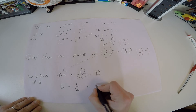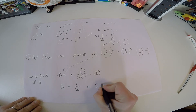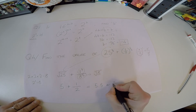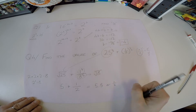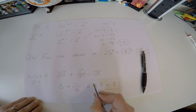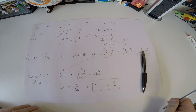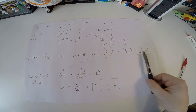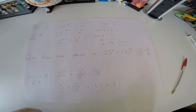That's 5.5, or 11 over 2 — whichever you prefer. I'd rather avoid decimals unless necessary.